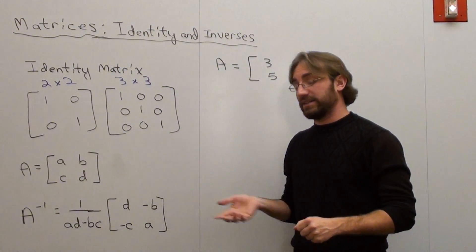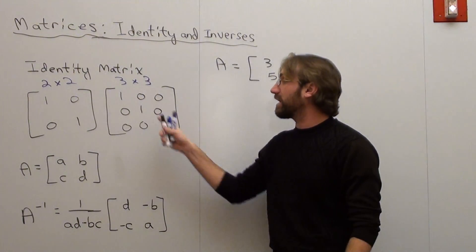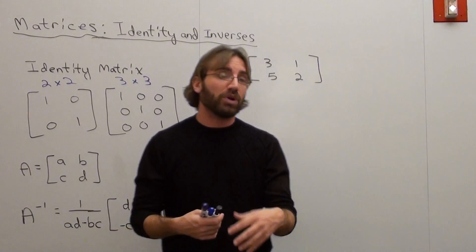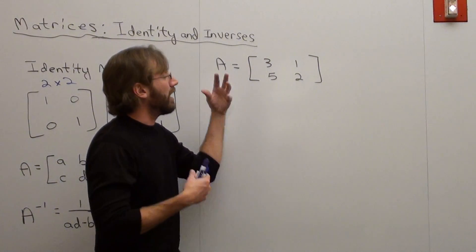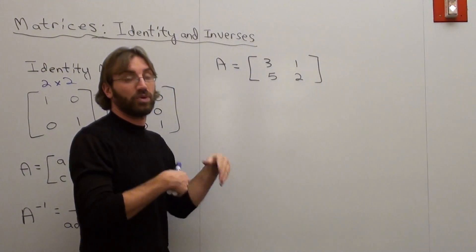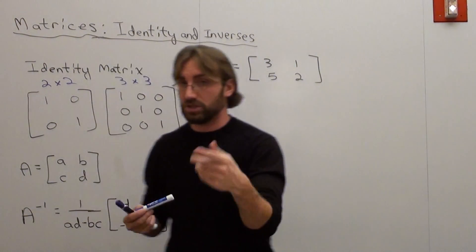We're going to be identifying identities and inverses. I already talked about identity matrices, and I told you the formula for an inverse. Now we're going to do an example where we will have an inverse. Last time we did an example where it didn't have an inverse. Now we're going to do an example where it does have an inverse.